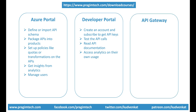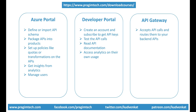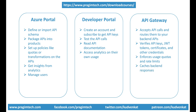Finally, what is API gateway? Well, it sits on top of your backend APIs. In this specific example, API gateway sits on top of our two backend APIs — weather and employee APIs — and it can do the following: accepts API calls and routes them to your backend APIs, verifies API keys, JWT tokens, certificates and other security credentials, enforces usage quotas and rate limits, caches backend responses, logs call metadata for analytics purposes. Above all, it transforms your API on the fly without actually modifying your API code.